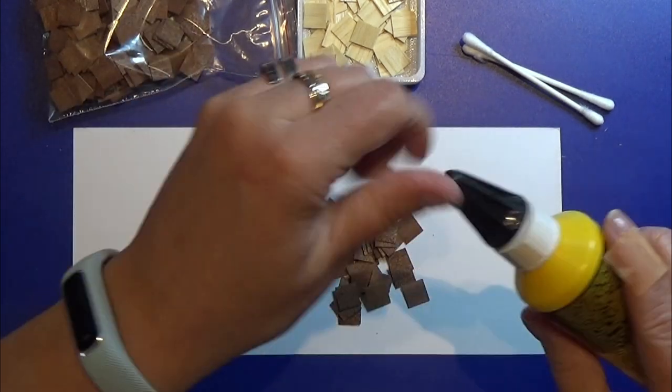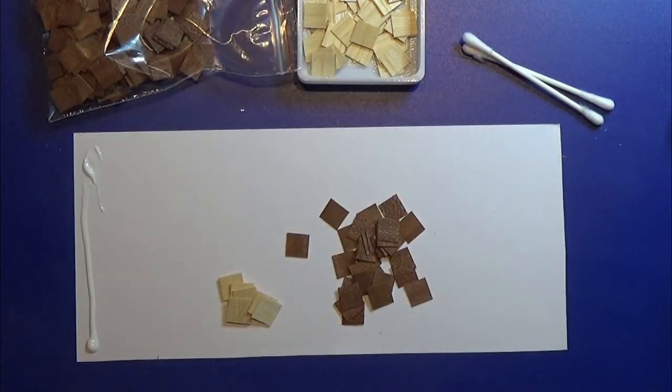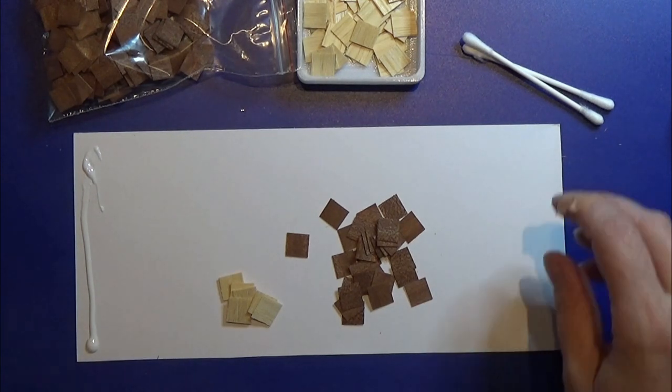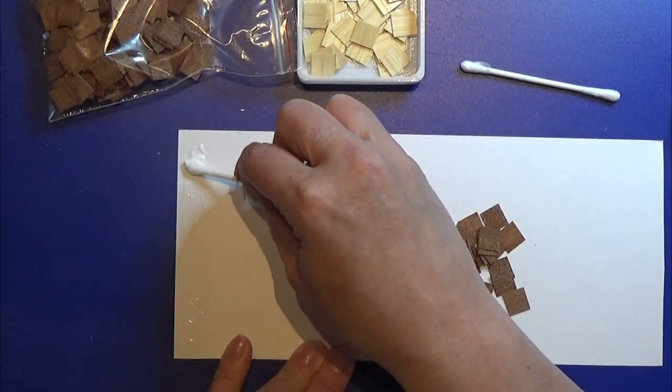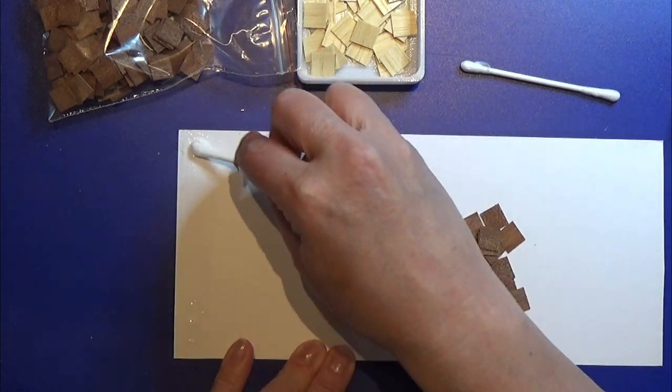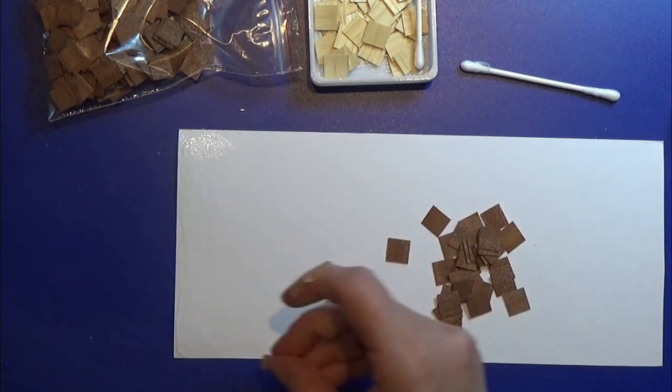I cut some wood veneer into squares that are one by one centimeters. I cut a piece of paper into the size of the floor in this little room, and I'm going to use my wood glue to glue on these pieces of wood veneer into a pattern that I really like for the floor.